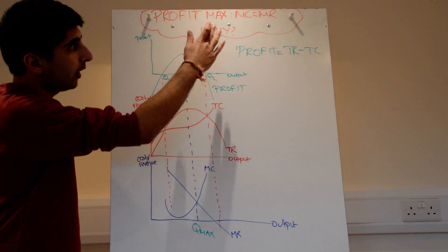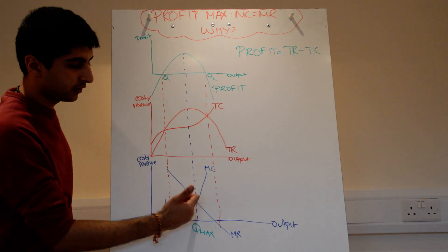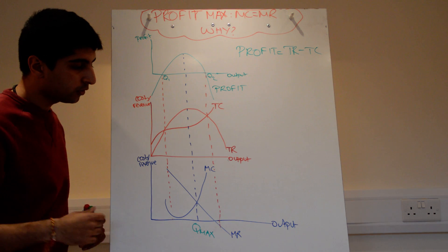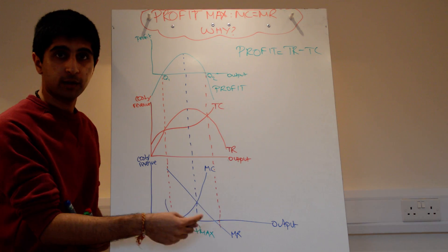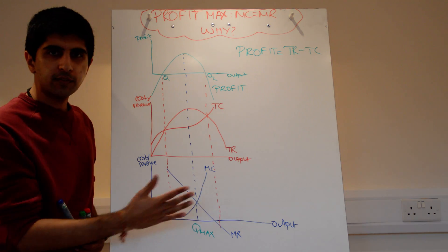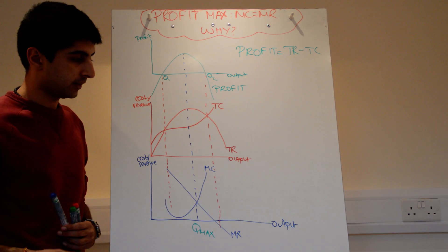The best way to consider why MC equals MR is profit maximising is to go either side. Let's go to the right-hand side. Any points to the right of MC equals MR, why can't any of those points to the right be profit maximising?